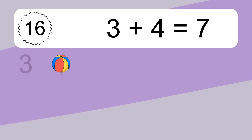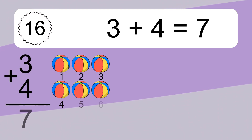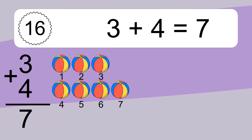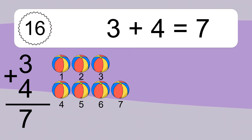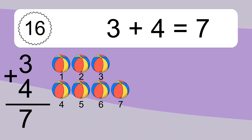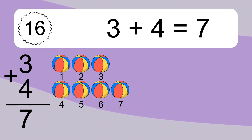3 plus 4 equals 7. Let's count it. 1, 2, 3, 4, 5, 6, 7.